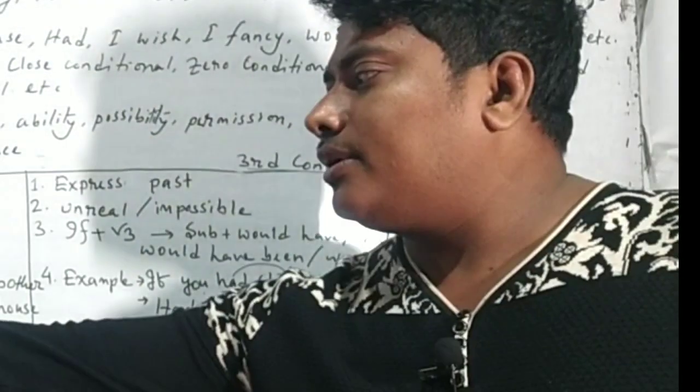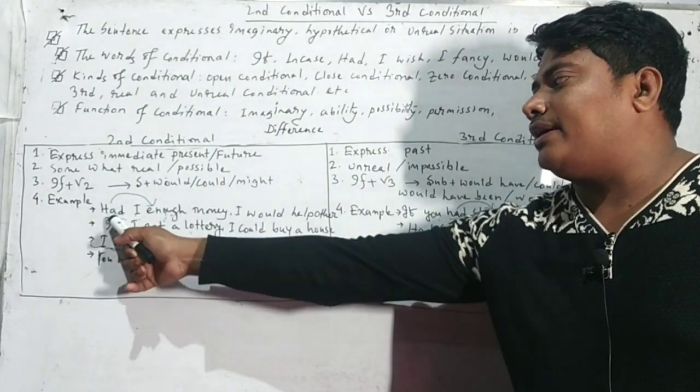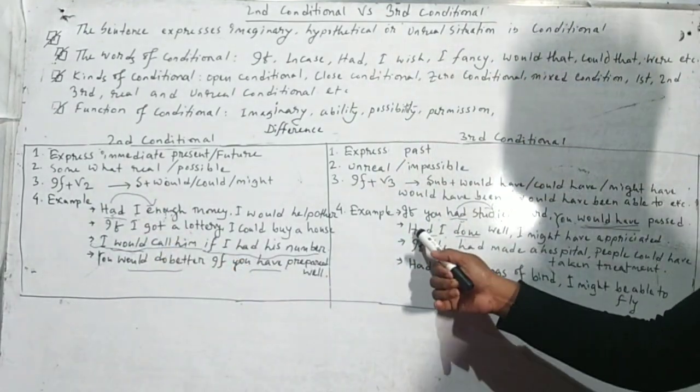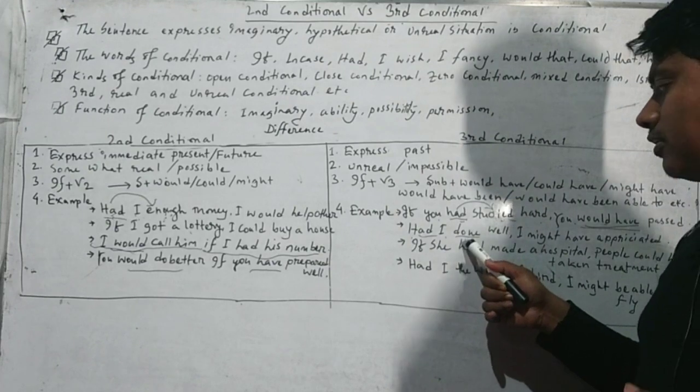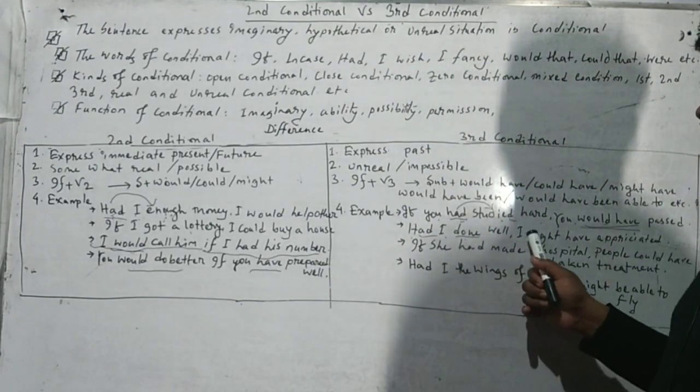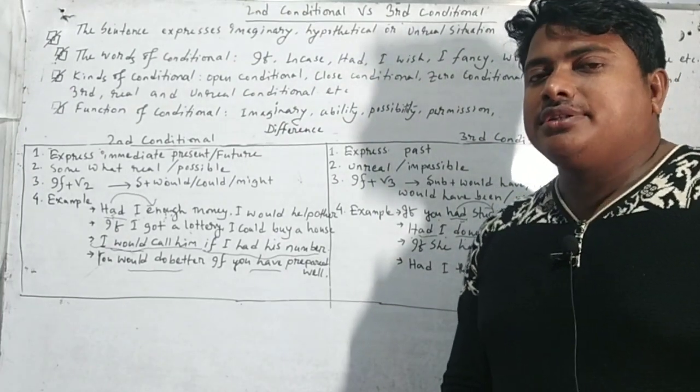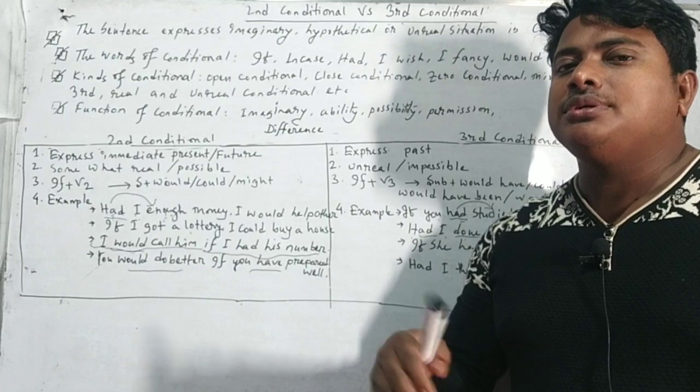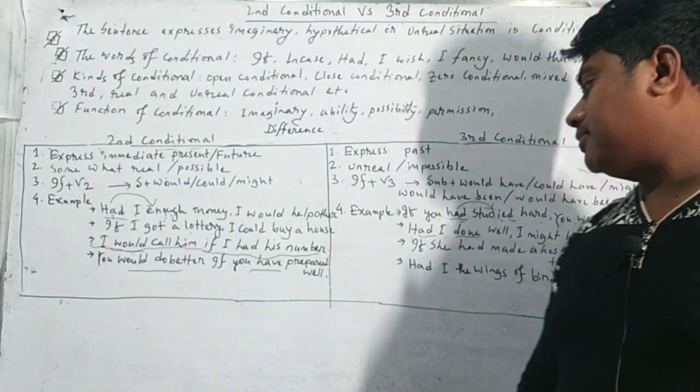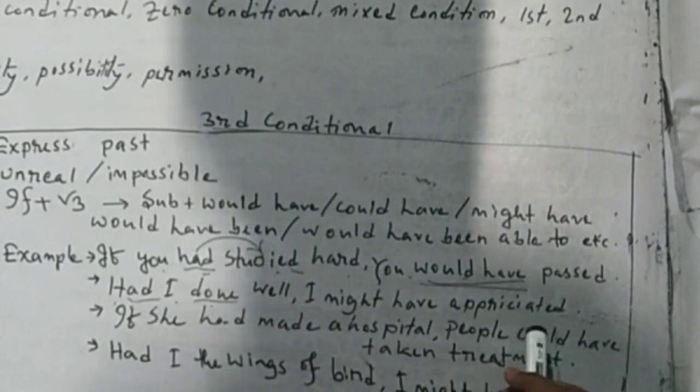Then another example. Had I done well. Before, in previous example, 'had I enough', 'had' takes adjective. Here, 'had' takes V3 or past participle. So, had I done well, I might have been appreciated. It is unreal situations, hypothetical situations, imaginative situations. So it is not possible.